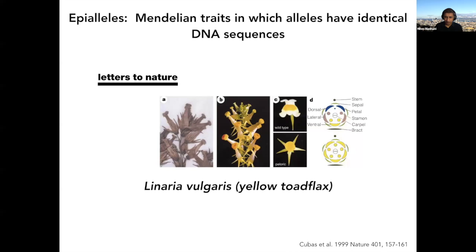These flowers are so different that Carl Linnaeus himself originally classified them as different species. Epialleles like this are frequently found in plants, but are relatively unstable — they don't have as good a segregation as DNA mutations.